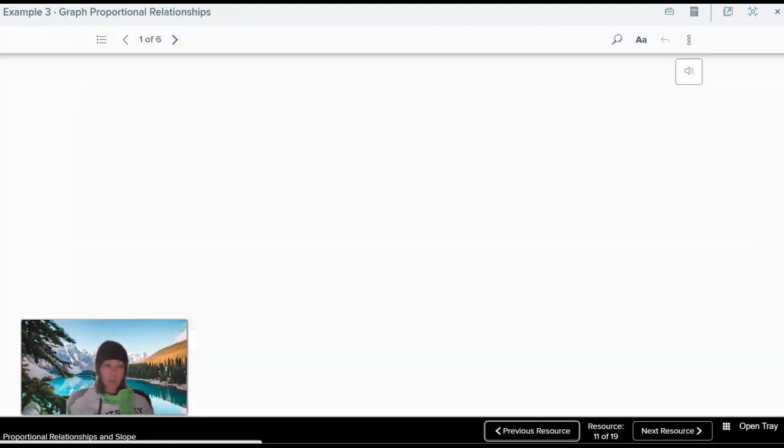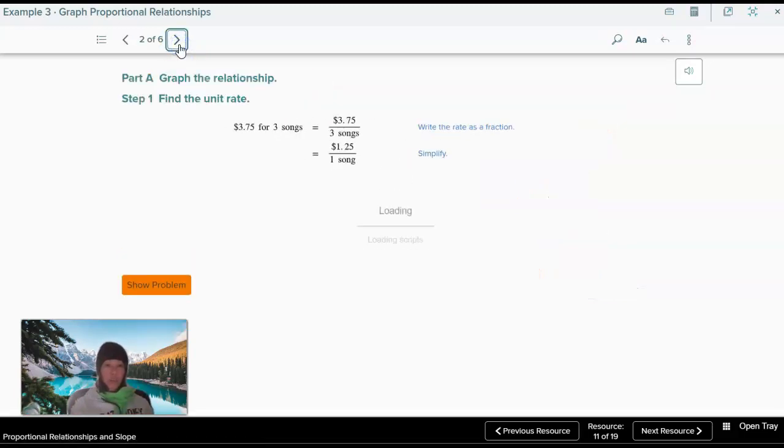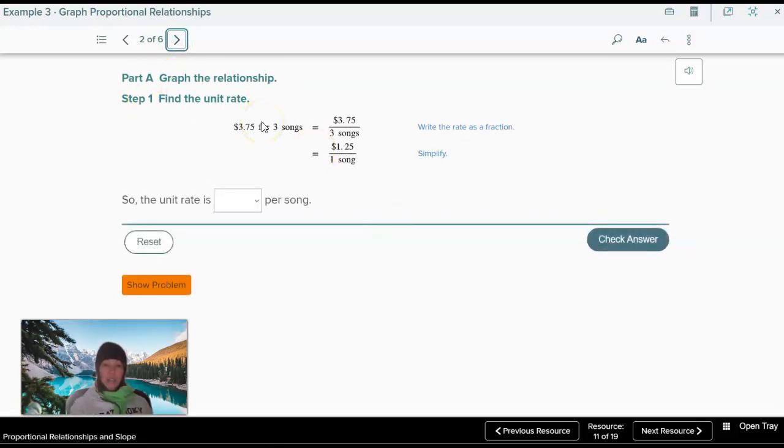Okay, last example for this video. An online music store charges $3.75 for purchasing three songs. Assume the cost Y in dollars is proportional to the number of songs X. Graph this relationship on the coordinate plane, then find and interpret slope. So each of these problems were kind of building and doing different things. The first one we have the graph, we had to find the slope. The second one we have the equation. We had to create the graph and interpret the slope. But now here we first have to find the unit rate. So our unit rate, if it's $3.75 for three songs, that means it's $1.25 for one song. We would just divide those two. So the unit rate is $1.25 per song. So unit rate is, what is your rate for one unit? One song in this case.